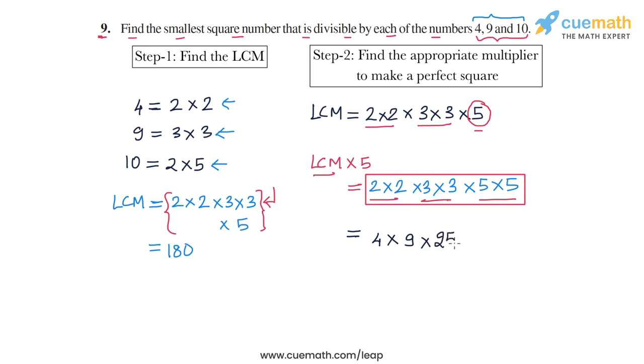And 4 into 9 is 36, 36 into 25 is 900. Or you could just take the LCM into 5 - LCM is 180, so 180 into 5 is 900. So the answer for this question is the smallest such number is 900, and this completes Question number 9.